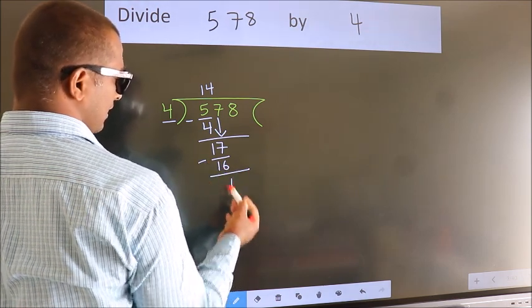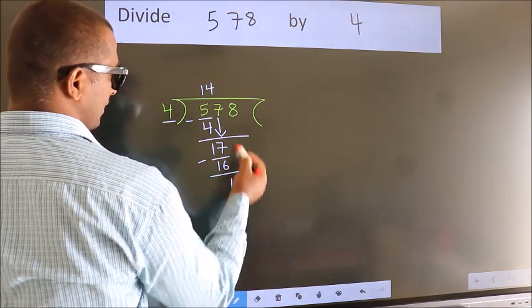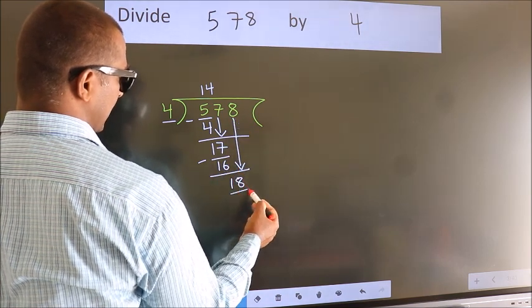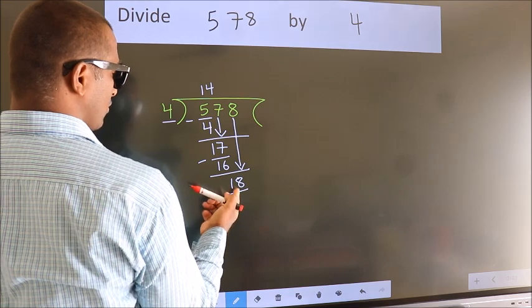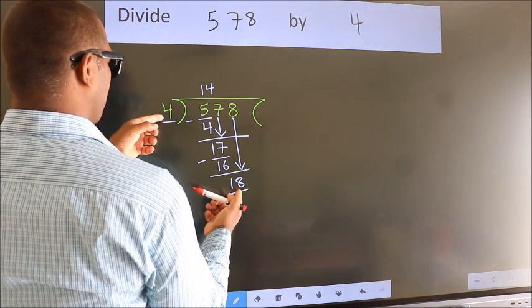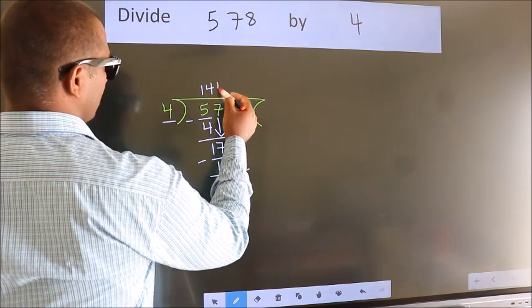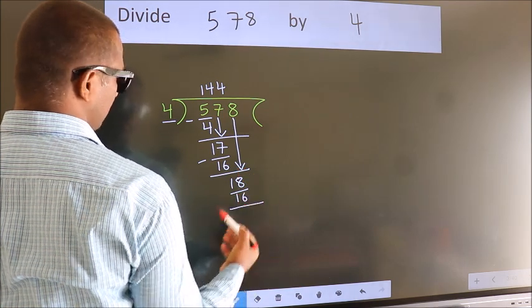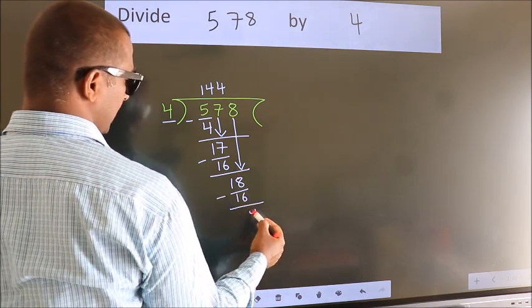We get 1. After this, bring down the beside number. So 8 down. So 18. A number close to 18 in the 4 table is 4 4s 16. Now we subtract. We get 2.